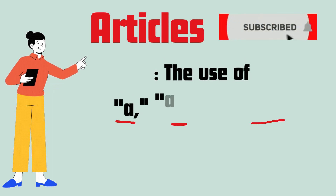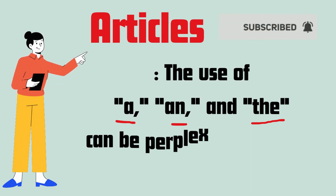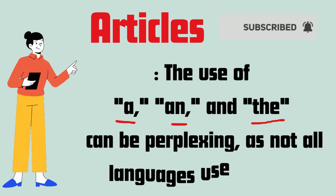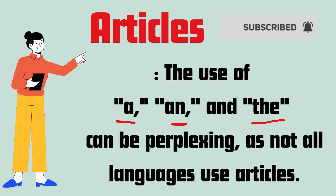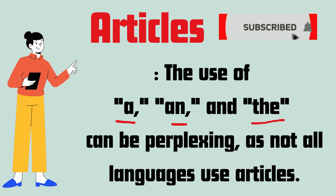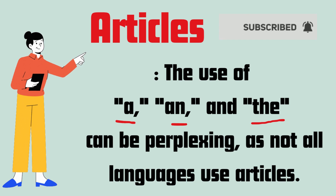Number five: articles. The use of 'a,' 'an,' and 'the' can be perplexing, as not all languages use articles.